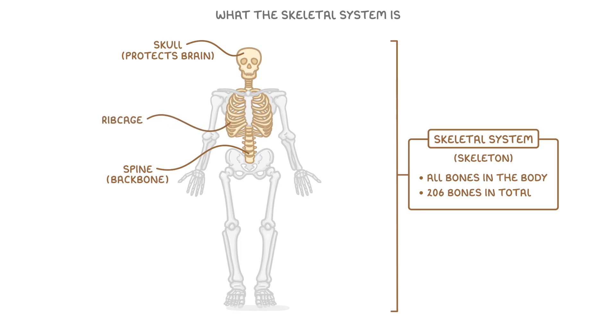The ribcage isn't a single bone, it's actually made up of lots of smaller bones called ribs. The job of the ribcage is to protect important organs like your heart and your lungs. Here at the front of the ribcage is a bone called the sternum. This is sometimes called the breastbone and it provides extra protection for your heart.